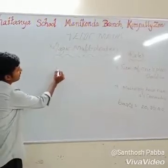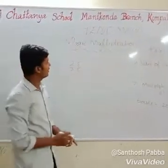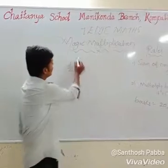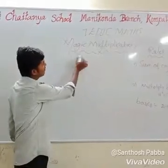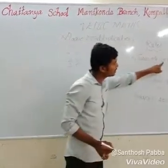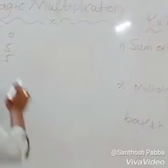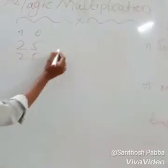Some of the examples are 25 into 25. So here, the 1's place and 10's place: the sum of the 1's place digits should be 10. So, 5 plus 5 is 10.